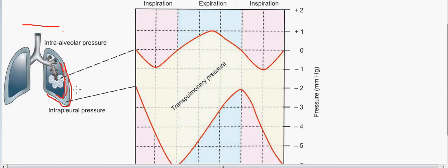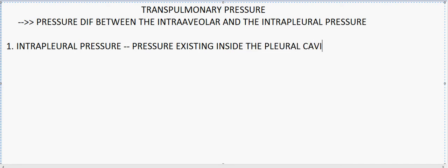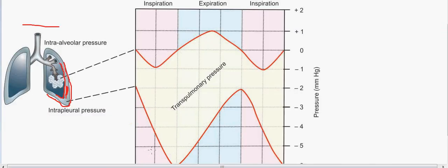We have the visceral pleura on the inside and the parietal pleura surrounding the outer surface of the lungs. Between these two layers is the intra-pleural cavity, and the pressure residing inside this cavity is called the intra-pleural pressure. Inside this cavity is a fluid called the intra-pleural fluid. The intra-pleural pressure is the pressure existing inside the pleural cavity, that is between the parietal and visceral pleura, which is exactly this region highlighted in red.